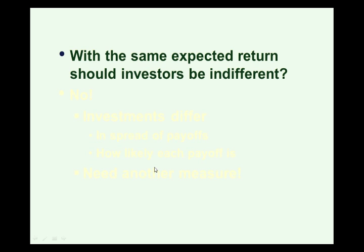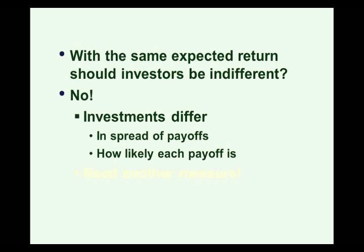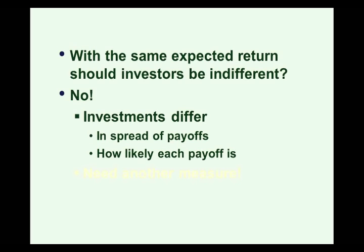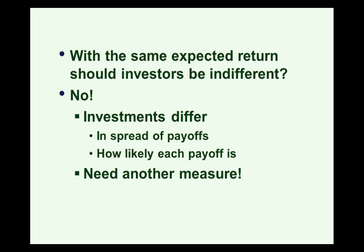So with these two investments having the same expected return, should the investor be indifferent? There's no reason to think an investor would be indifferent between investments 1 and 2 — they might have specific preferences. Between these investments, there's a difference in the spread of payoffs and how likely each payoff is. The worst case scenario is different: in investment 1 it was minus 50%, in investment 2 it was minus 20%. The best case and the likelihood of each scenario also differ. So we need another measure — these investments have equal expected returns but investors would not be indifferent between them.